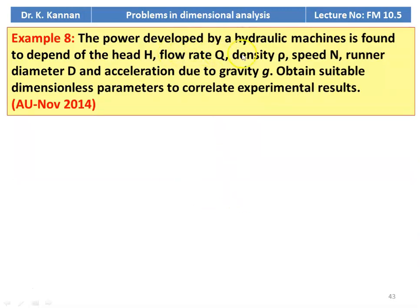Example number 8. The power developed by a hydraulic machine is found to depend on the head h, flow rate q, density rho, speed n, runner diameter d, and acceleration due to gravity g.